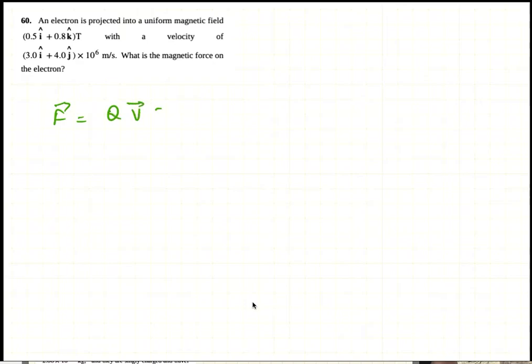So that's Q V cross B, which is Q times (3i + 4j) into 10 to the power 6 meters per second, cross (0.5i + 0.8k) Tesla.